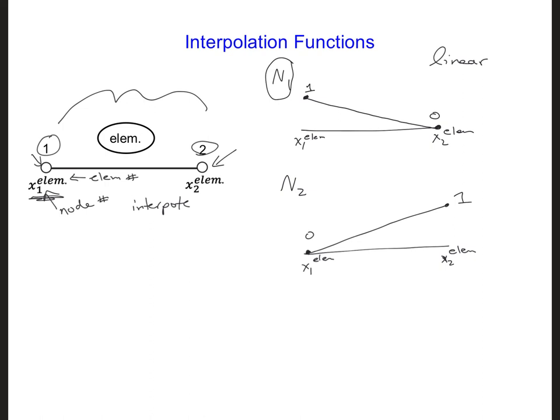Later, when we combine all of the nodes, the interpolation functions will look like this across the grid. If I have three elements with a total of four nodes, then this will be N1 and N2 of the first element. Then we have N1 and N2 of the second element. And we have N1 and N2 for the third element. And so this will create a linear interpolation of EZ in between all of the nodes.